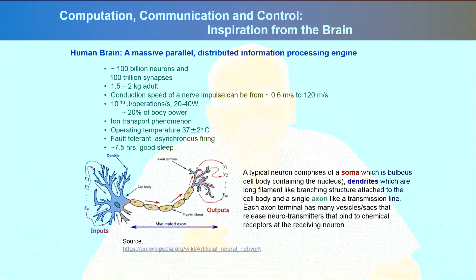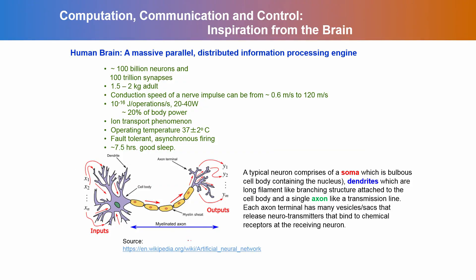We need 7.5 to 8 hours of good sleep to function. Now, looking at this biological schematic of a neuron: a typical neuron comprises a soma, which is the bulbous cell body containing the nucleus. We have dendrites, sort of like the antlers of a reindeer — long filament-like branching structures attached to the cell body. We can think of sensory inputs at the input of these dendrites.